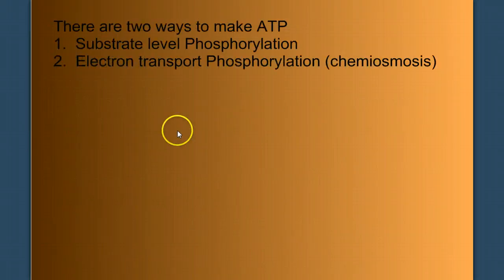It turns out there are two ways to make ATP. Substrate level phosphorylation and electron transport phosphorylation, which is driven by chemiosmosis.